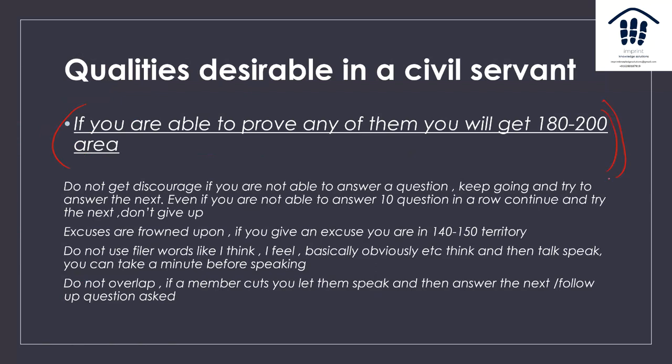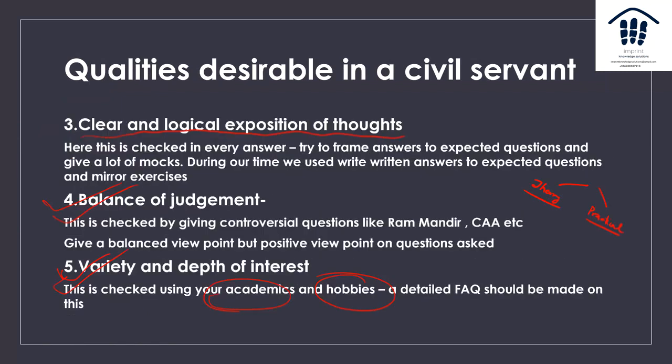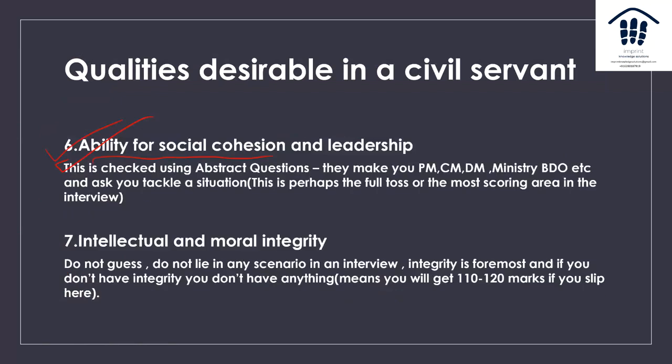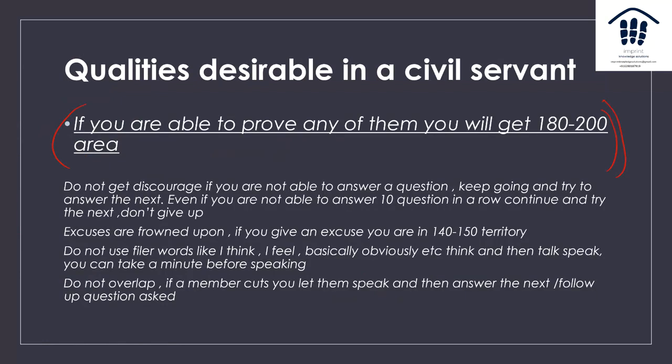The most interesting fact is that if you're able to prove even any one of these seven qualities — mental alertness, critical powers of assimilation, clear logical expression of thoughts, balance of judgment, variety and depth of interest, ability for social cohesion, or intellectual moral integrity — you'll get at least 180 or even more. It's difficult to show these qualities, but if you prepare well you can do it easily. Do not get discouraged; even if you can't answer a question, keep going and try to answer the next one. Even if you can't answer 10 questions in a row, continue — do not give up. Especially with abstract questions, since you're not really prepared for them, try to answer them anyway.